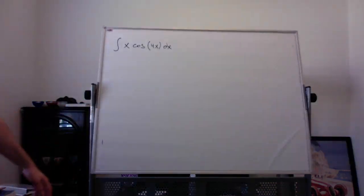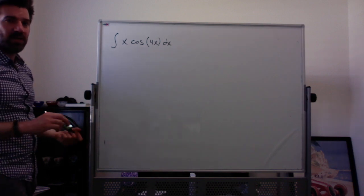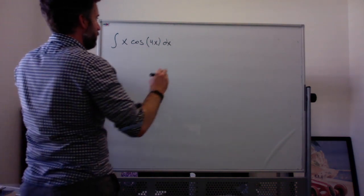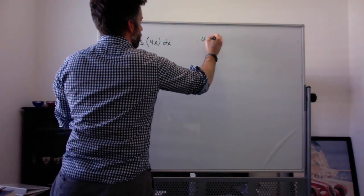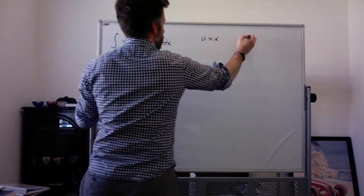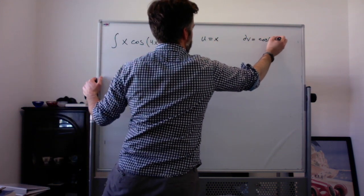Similar but slightly different example over here. x times cosine of 4x. So when I do this, I'm still going to pick u equal to x. And dv now has to be everything else which is cosine of 4x.